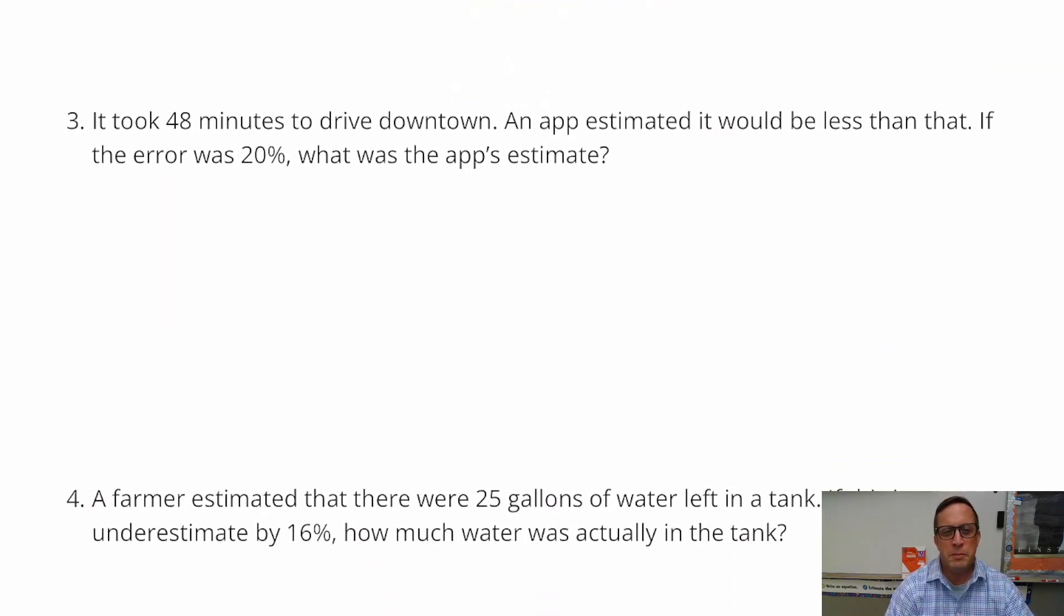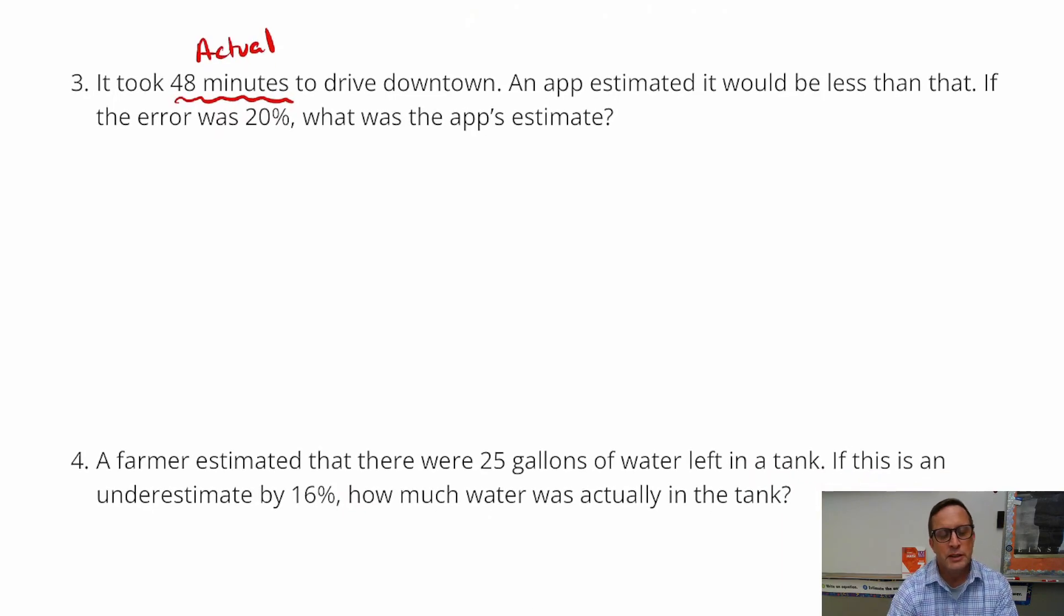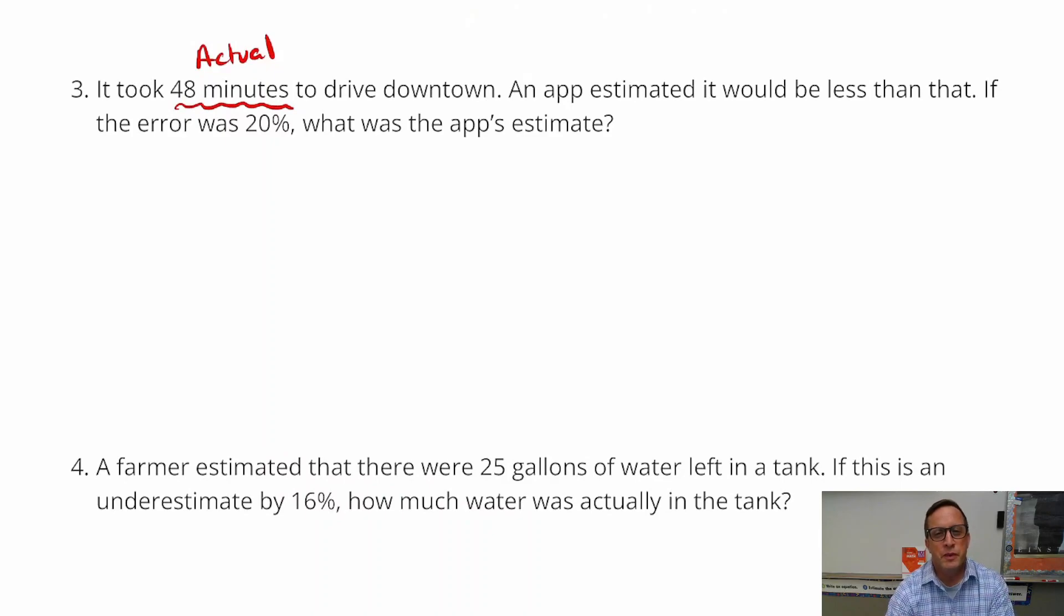For number three, it took 48 minutes to drive downtown. An app estimated it would take less than that. If the error was 20%, what was the app's estimate? So this number right here, it doesn't use this language, but this is the actual, you know, that's what it actually took.